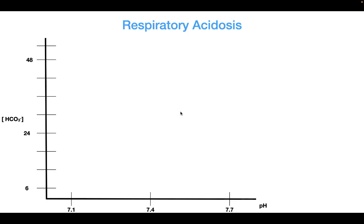So what are the applications of this diagram? Let's look at one condition: respiratory acidosis. Respiratory acidosis is when you have a high amount of CO2 in your alveoli. This would be analogous to the partial pressure of CO2 being equal to 80 Torr, and the curve for that partial pressure is this curve.